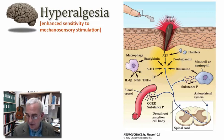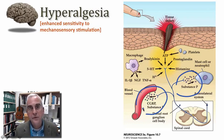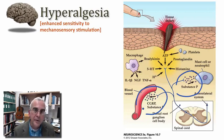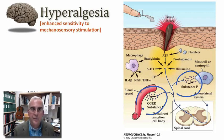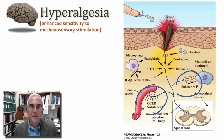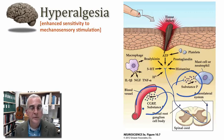Notice that the free nerve ending itself can release neuroactive peptides that interact with immune cells or the vasculature — there is bidirectional signaling between the inflamed tissue and the free nerve ending. These interactions can increase the sensitivity of that free nerve ending to the signals being transduced into pain. In addition to peripheral sources, there can also be changes within the central nervous system — specifically in the dorsal horn or spinal trigeminal nucleus — leading to central sensitization.